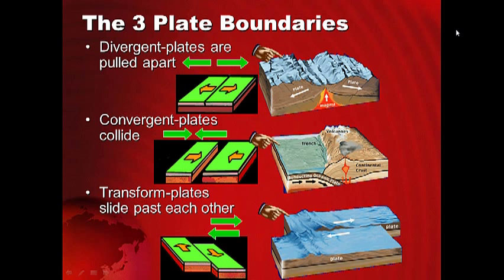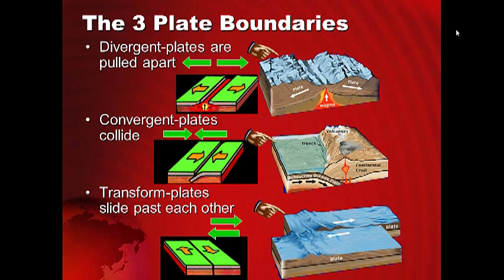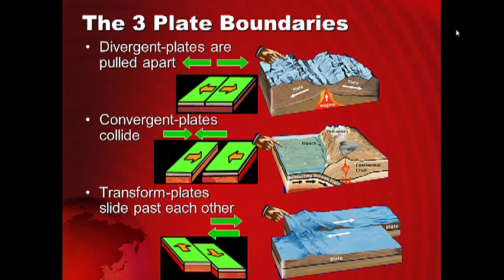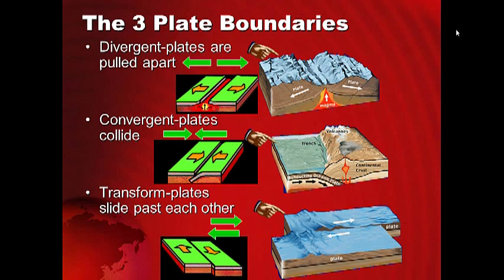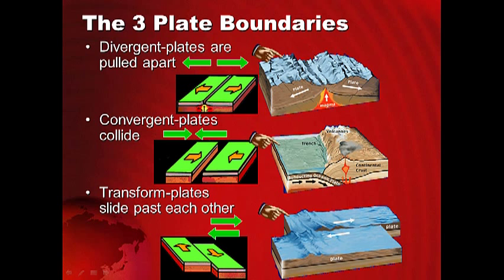The three plate boundaries: plates move in three basic directions. Divergent plates are pulling apart — remember seafloor spreading? Plates were spreading apart. Now with the theory of plate tectonics, we call this a divergent plate boundary. Plates spread apart where magma rises and new ocean crust is created.